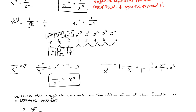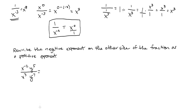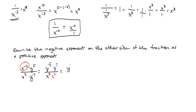For example: x to the negative 2 times y to the fifth over x to the third times y to the negative 7. The y to the fifth and x to the third are positive and stay. The x to the negative 2 becomes x squared and moves to the denominator; the y to the negative 7 moves to the numerator as y to the 7. Then we use the product rule: y to the fifth times y to the seventh is y to the 12th on top, and x squared times x to the third is x to the fifth on the bottom.